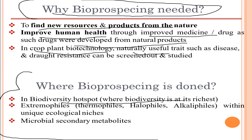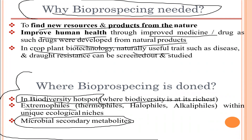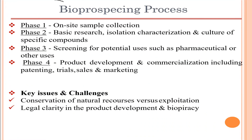Bioprospecting is done in hotspots where biodiversity is at its richest, mainly in forests and highly important ecosystems containing many trees, plants, and diverse life. It also includes extremophiles such as thermophiles, halophiles, and alkalophiles with unique ecological niches. It is also carried out in microbial secondary metabolites, which are mainly produced in the stationary phase, leading to production of antibiotics and other compounds.